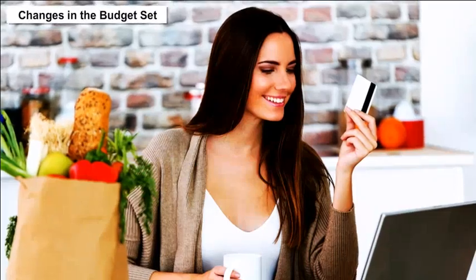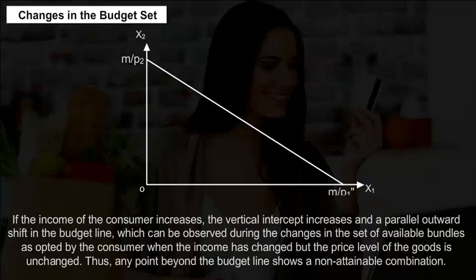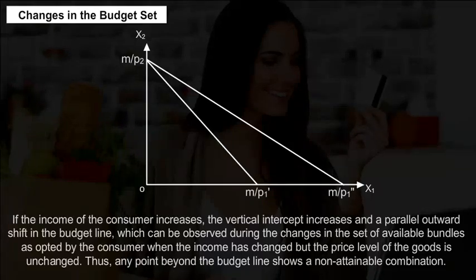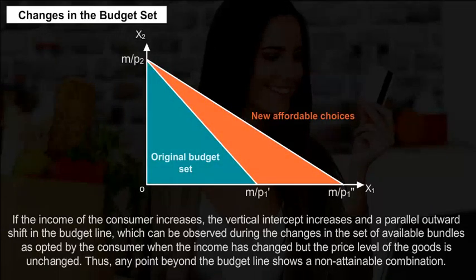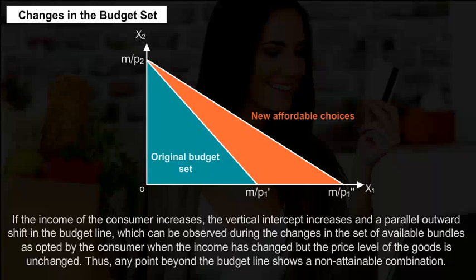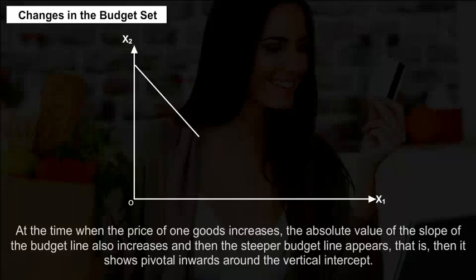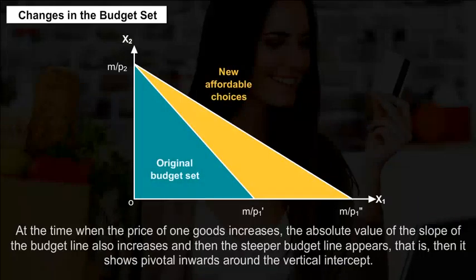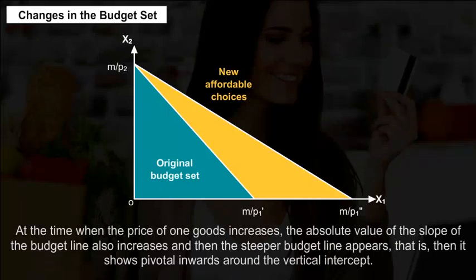Budget line: The slope of the budget line in graphical interpretation calculates the amount of change in the second good required per unit change in the first good along the budget line. When the consumer wants to substitute one good for another, she needs to give up the proportion reflecting the unit prices of the two goods. If a point represents a bundle costing less than the consumer's income, the consumer would spend the additional money on a bundle containing more of other goods.